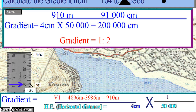The gradient between trig beacon 104 and spot height 3986 is 1 is to 2. This means that for every two meters you traverse horizontally, the slope goes up by one meter.